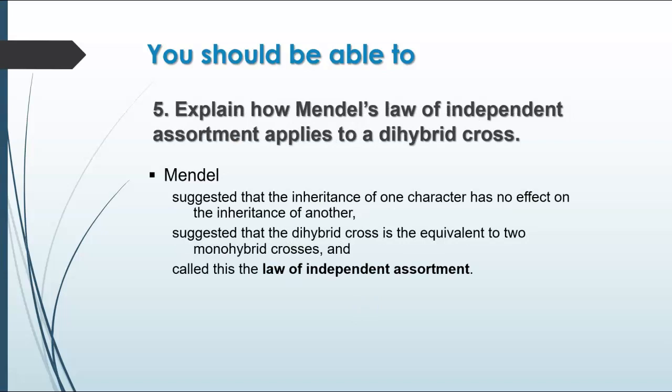Mendel's Law of Independent Assortment is what he figured out when he tried looking at two traits at the same time. He found that they didn't necessarily inherit the parental phenotypes — they could be different — because the inheritance of one characteristic is not really influencing the inheritance of another one. We know today that's because they would be on separate chromosomes. In the case of genes on the same chromosome, the closer together they are, the more likely they are to be separated; the farther apart, the more likely they are to be inherited together. The dihybrid cross is basically like two monohybrid crosses, and you can multiply the results together to get the different percentages or fractions.